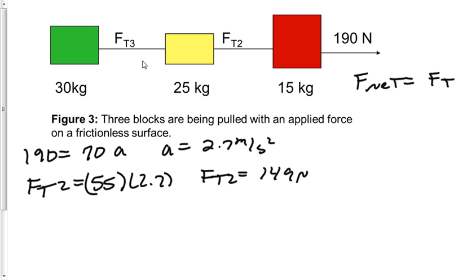Now we look at force tension 3. Force tension 3 only has to pull the 30-kilogram box. So I'll say force tension 3 is equal to 30 multiplied by the 2.7. All three boxes are accelerating at the same rate. So force tension 3 is going to equal 81 newtons.